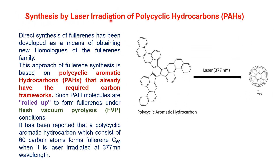The second part of the laser irradiation method is synthesis by laser irradiation of polycyclic aromatic hydrocarbons (PAH). In this case, polycyclic hydrocarbons that already have the C60 carbon framework are used, so they do not need to be modified to form C60. This is the main advantage of these polycyclic hydrocarbons — they directly produce C60. Direct synthesis of fullerenes using this approach has been developed as a means of obtaining new homologues of the fullerene family.